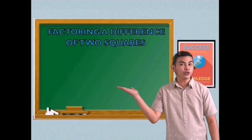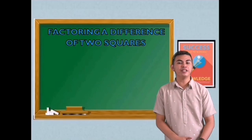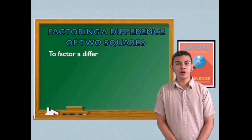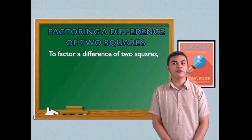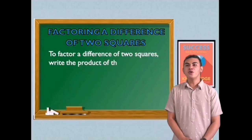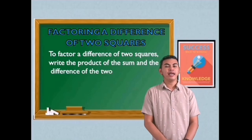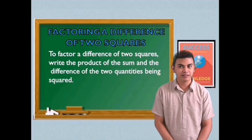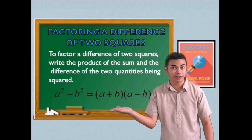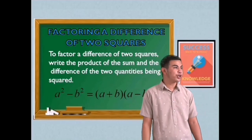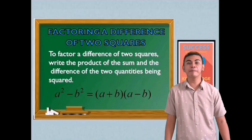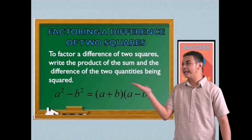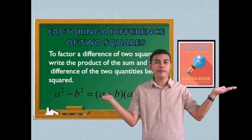Let's talk about our topic for today: factoring a difference of two squares. To factor a difference of two squares, write the product of the sum and the difference of two quantities being squared. Let's have the pattern. a squared minus b squared — what are the factors? a plus b and a minus b.